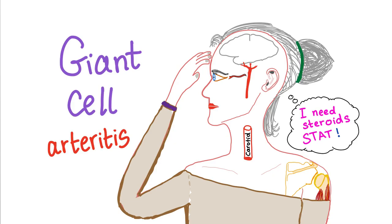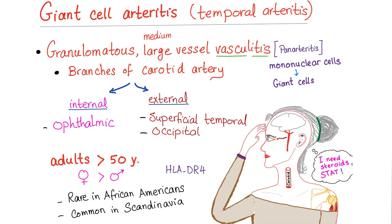It will present with headache, and steroids need to be given stat — fast — it's an emergency. Giant cell arteritis is historically known as temporal arteritis, because the headache is over the temple or the temporal region.